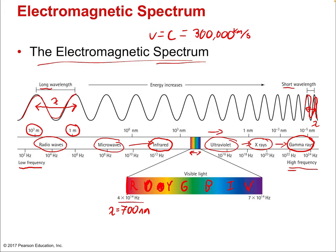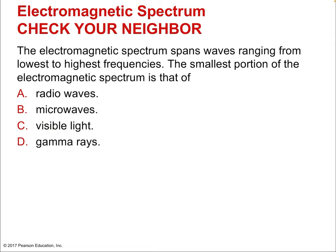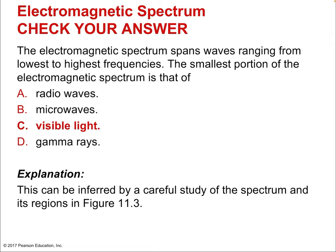So much of science involves measuring these types of light. The electromagnetic spectrum spans waves ranging from lowest to highest frequencies. The smallest portion of the electromagnetic spectrum is visible light — it just takes up a tiny portion of the overall spectrum.